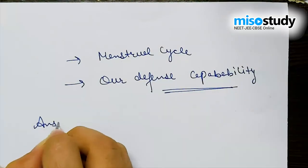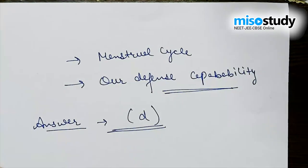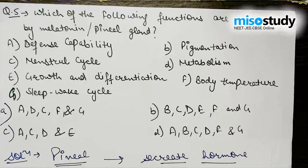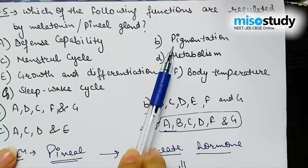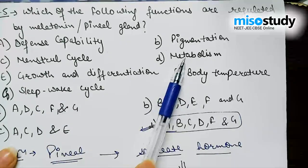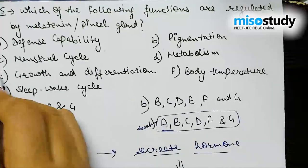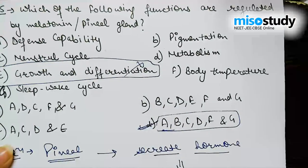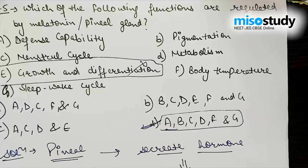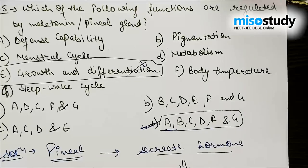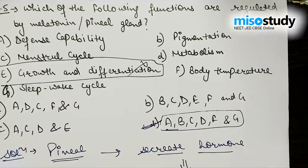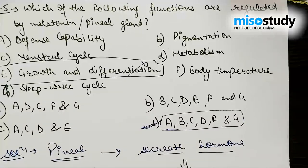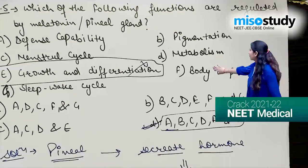From this discussion, the right answer is Option D, which includes defense capability, pigmentation, menstrual cycle, metabolism, body temperature and sleep-wake cycle. This means apart from growth and differentiation, melatonin secreted by the pineal gland works for all these functions. This is all about the session on Chemical Coordination and Integration. In the next session we start 12th section NEET biology. Hope you liked the session — stay tuned to mesostudy.com, stay safe, stay home, thank you very much.